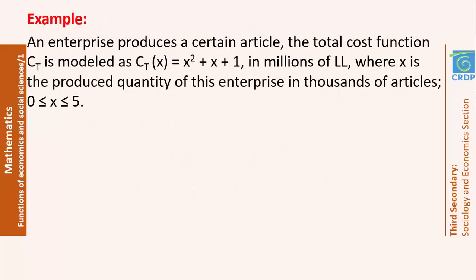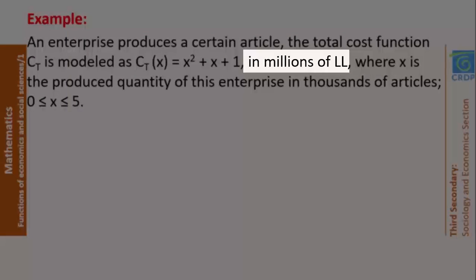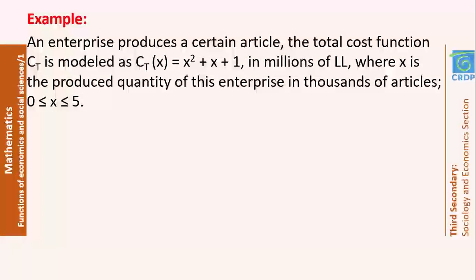Here is an example. An enterprise produces a certain article. The total cost function Ct is modeled as Ct(x) = x² + x + 1 in millions of Lebanese lira. In this chapter, you have to be very careful with the units given for each function — any value of the total cost will be followed by millions of Lebanese lira. X is the produced quantity in thousands of articles, so when x is between 0 and 5, choosing x equals 4 means 4,000 articles are produced.